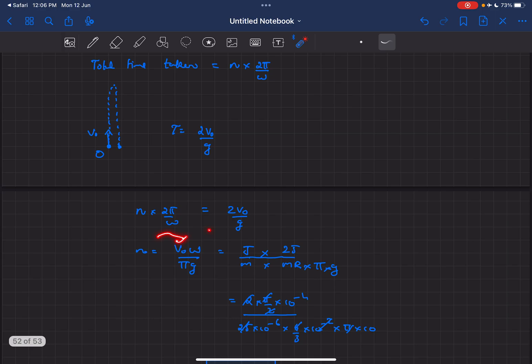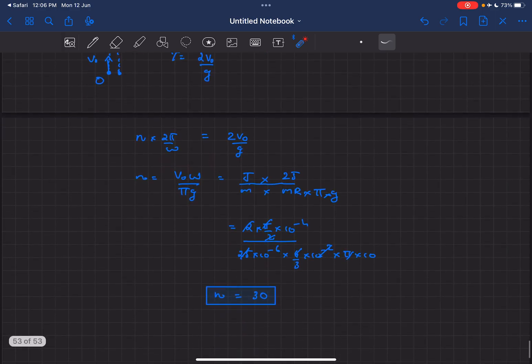Substituting the value of v₀ and ω into this, we'll get the answer of n as 30. So that's it, thank you.